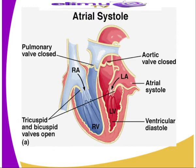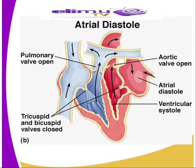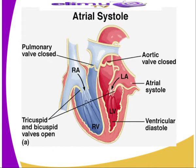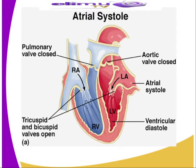A ventricular systole is when the ventricle walls contract. When the ventricle wall contracts, it generates pressure which causes the atrioventricular valves to close, producing the first heart sound known as the lub sound. The high pressure also causes the semilunar valves to open. The contracting ventricle forces blood out through the open semilunar valves into the pulmonary artery and aorta. At the end of ventricular systole, the pressure in the ventricle drops, the semilunar valves close, producing the second heart sound, the dub sound.